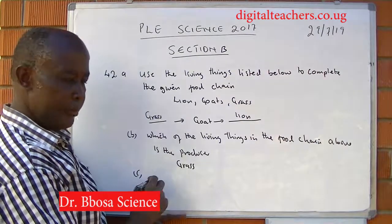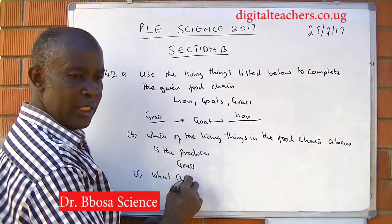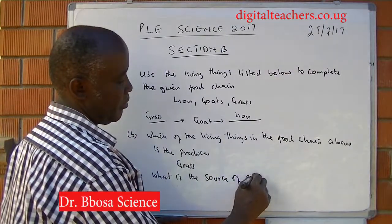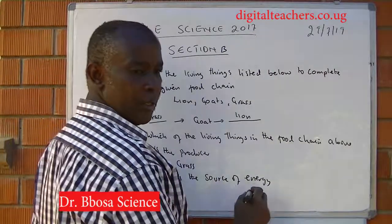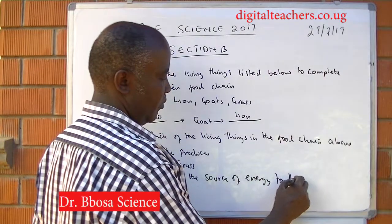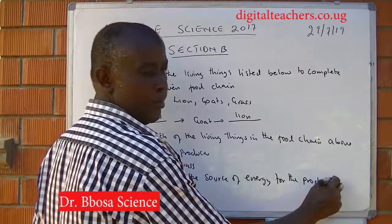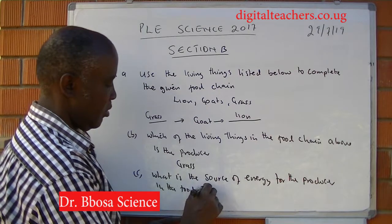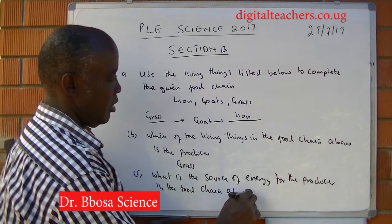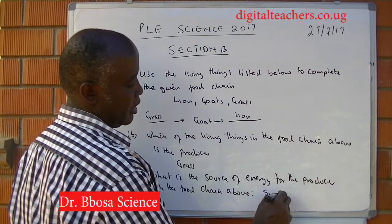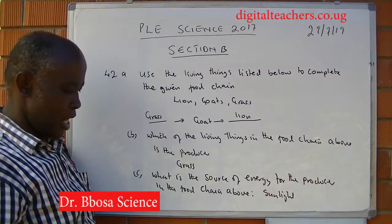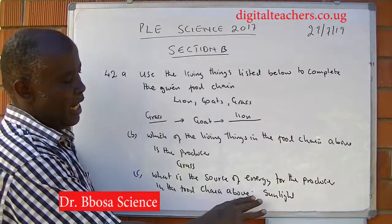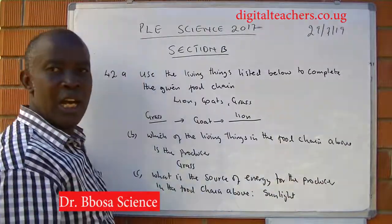What is the source of energy? That is sunlight. Sunlight is the source of energy for the producer. Grass makes food from water and carbon dioxide using energy from the sun — using sunlight as the source of energy.